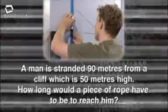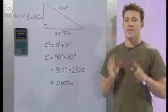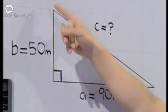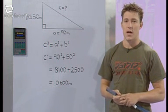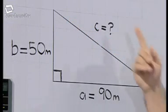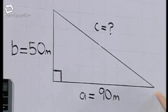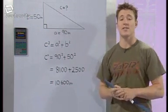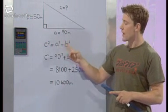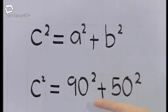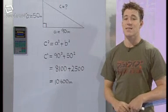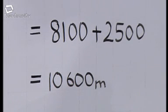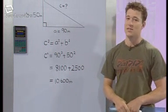The key to answering this is to realise that the man, the cliff and the rope all form a right-angled triangle. The hypotenuse is the length of the rope, so I've labelled that C. I've called the distance from the man to the cliff A, and the height of the cliff B. From Pythagoras' theorem, C squared equals A squared plus B squared, which is equal to 90 squared plus 50 squared, and that's 8,100 plus 2,500. So C squared equals 10,600. The rope needs to be at least 10,600 metres long.